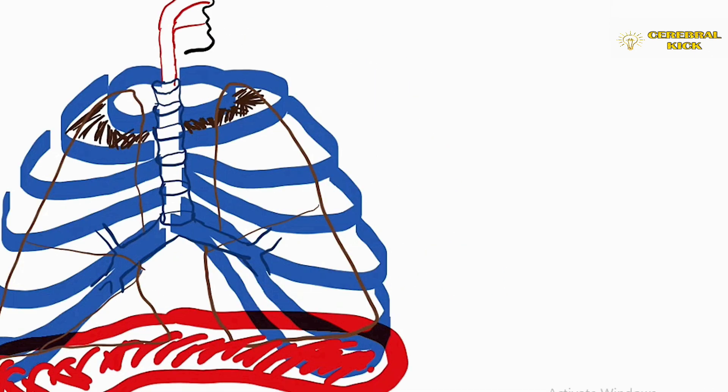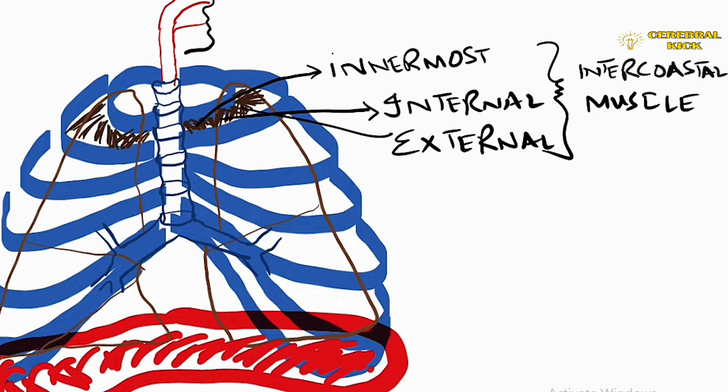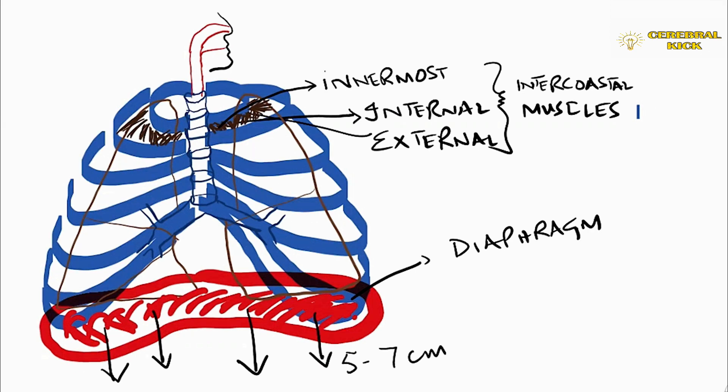The intercostal muscles primarily the innermost, the internal and the external. The diaphragm is the key muscle responsible for inspiration. When the diaphragm moves downwards around five to seven centimeters, it causes expansion of the chest and is responsible for 75% of inspiration.